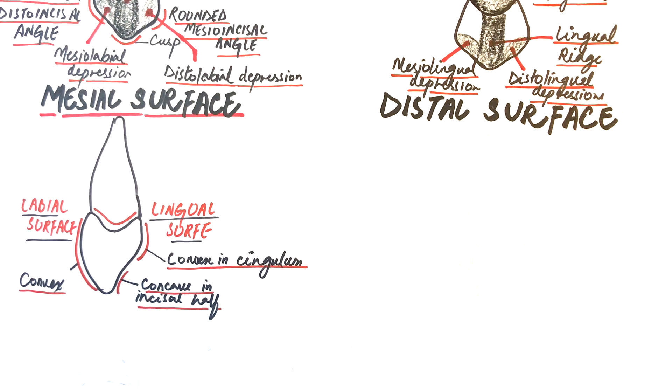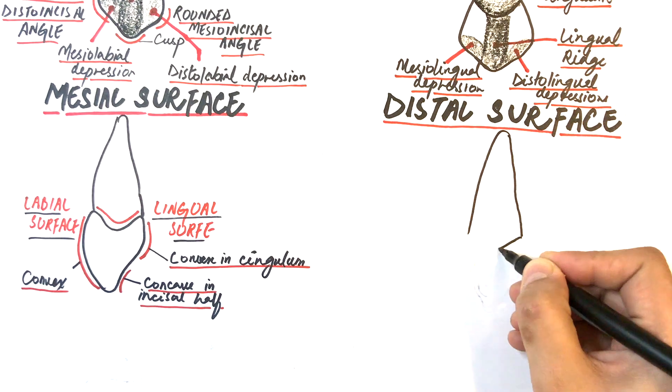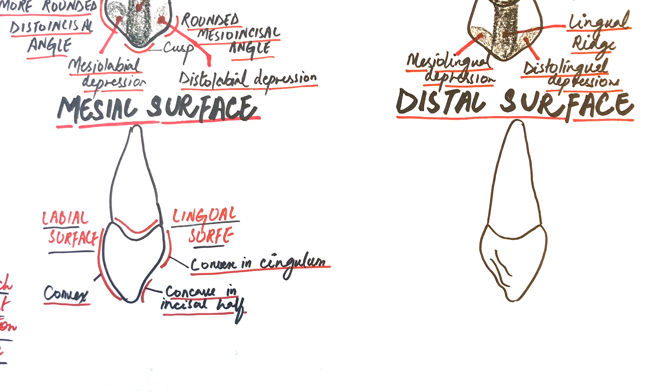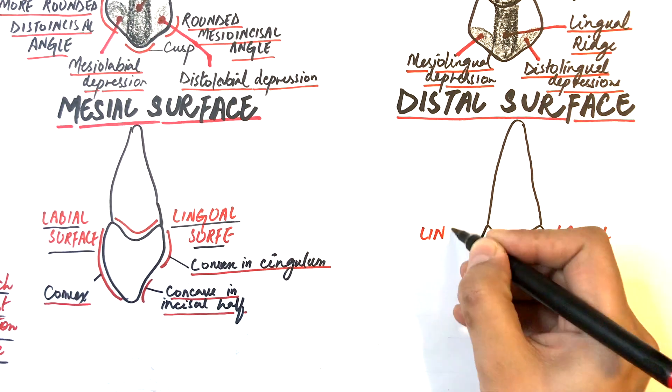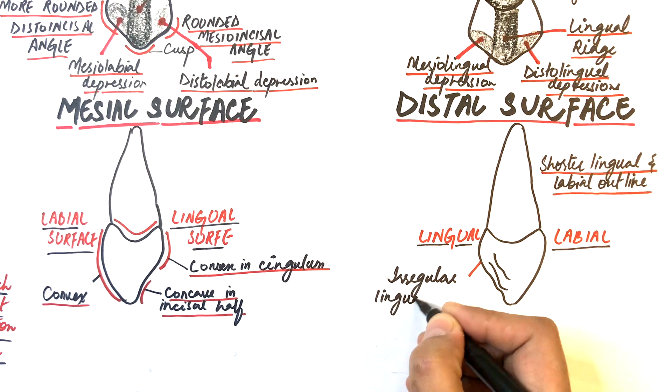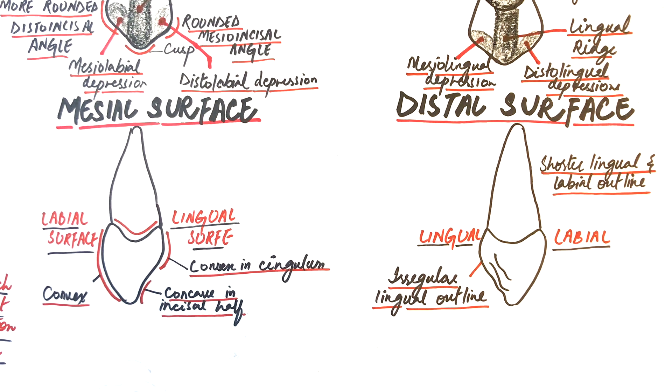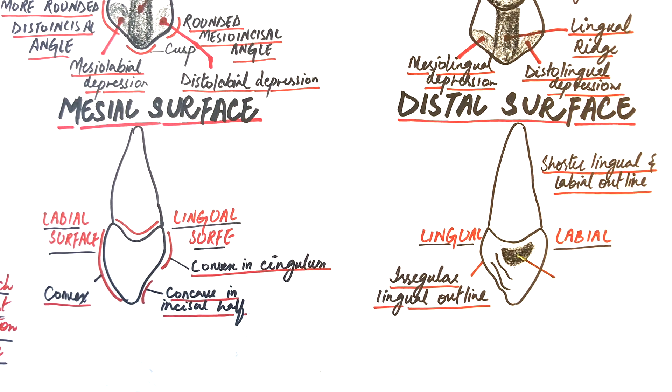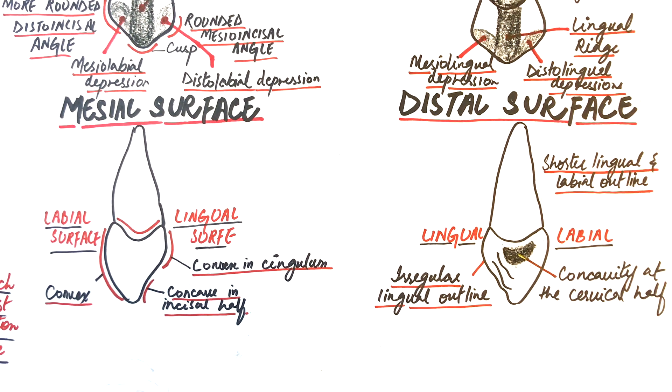The distal surface is similar to the mesial surface with only a few exceptions. It's generally smaller with shorter lingual and labial margins. The lingual outline of the distal surface is comparatively irregular in shape. The cervical margin exhibits less curvature incisally than it does on the mesial surface, and a concavity is usually present in the cervical half of the distal surface.